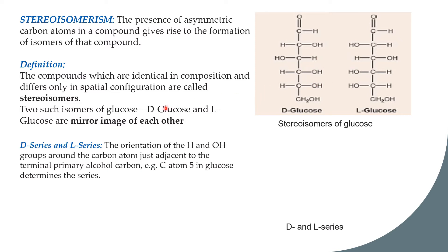In the D and L series, the D isomer and L isomer differ by the orientation of the H and OH group around the carbon just adjacent to the terminal primary alcohol group. One terminal is the aldehyde and the other terminal is the alcohol, so we look at the carbon adjacent to the terminal primary alcohol.